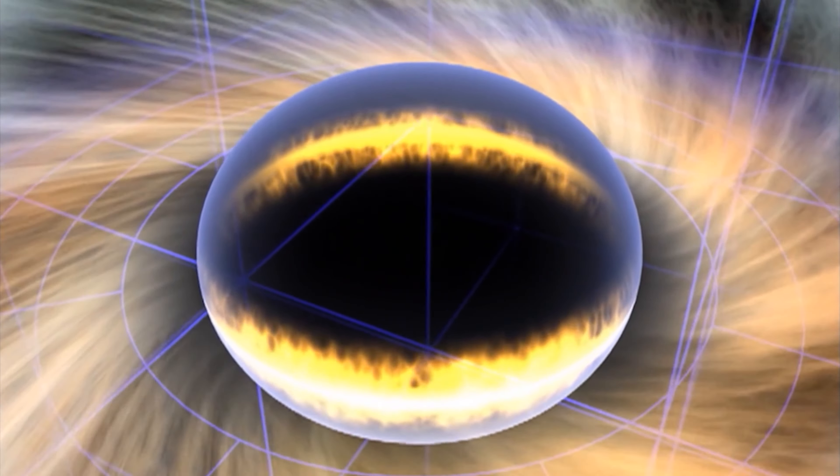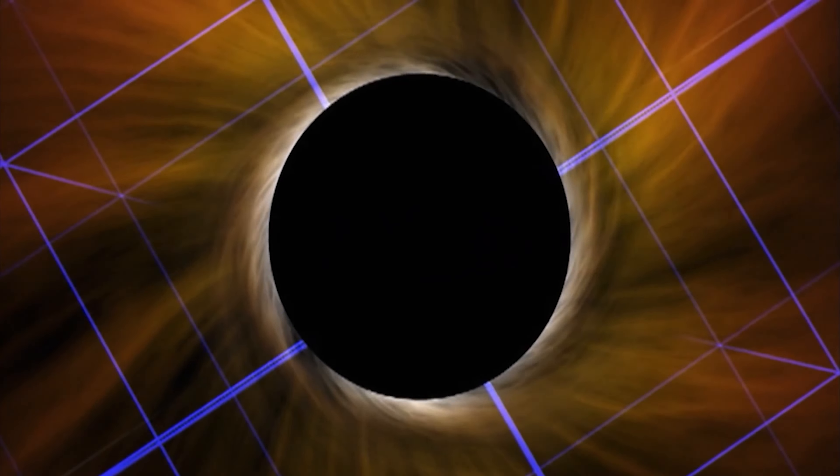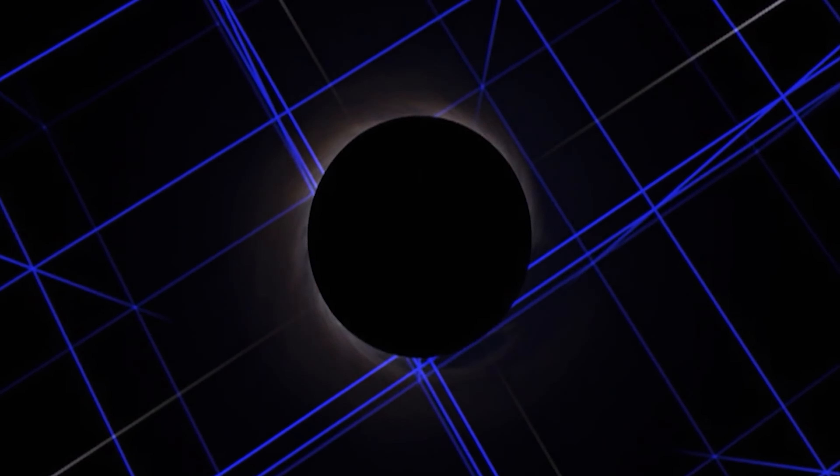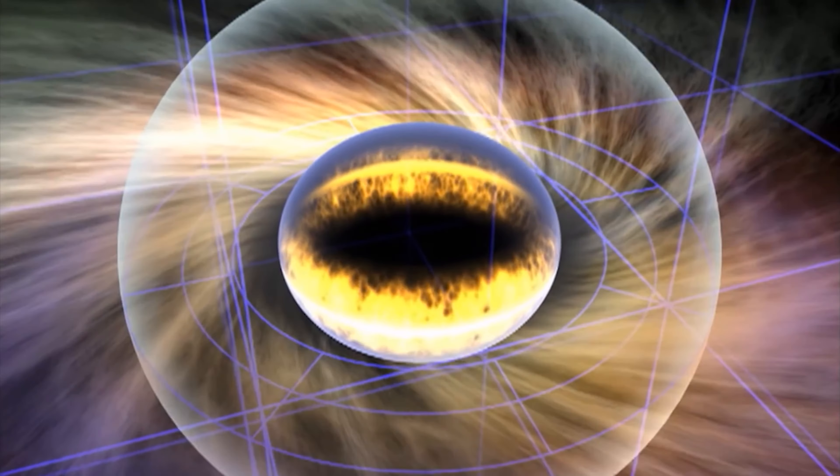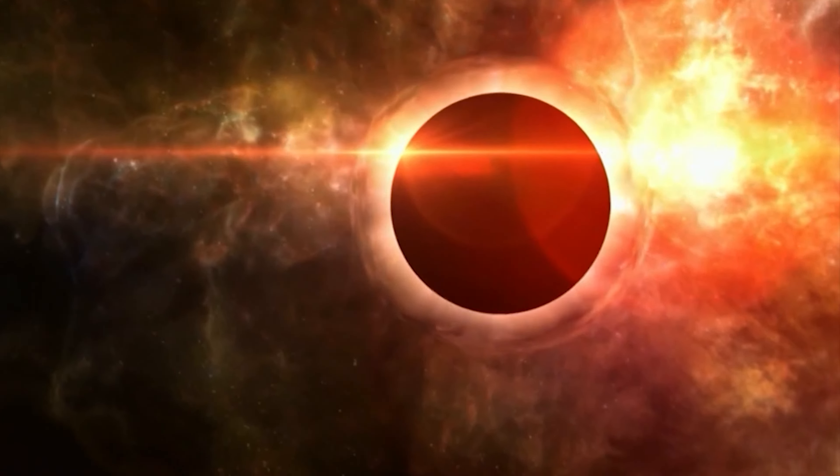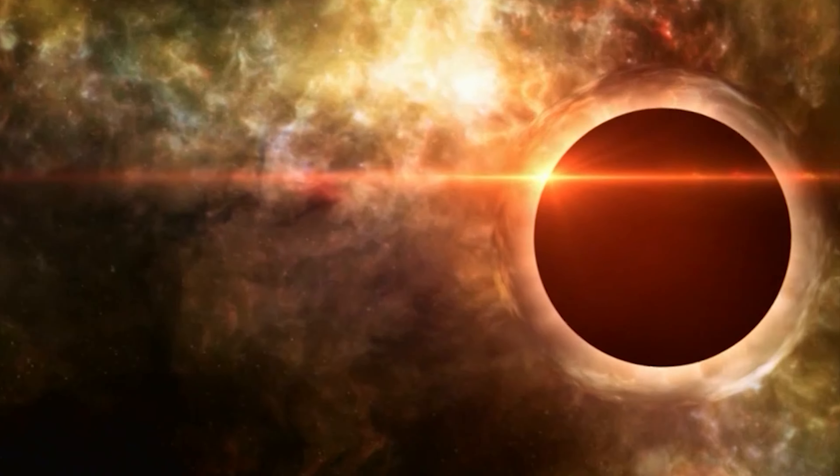The radius of that sphere is the Schwarzschild radius for the object. This very value is the radius of the black hole. For example, the Schwarzschild radius of the sun is 3 kilometers.